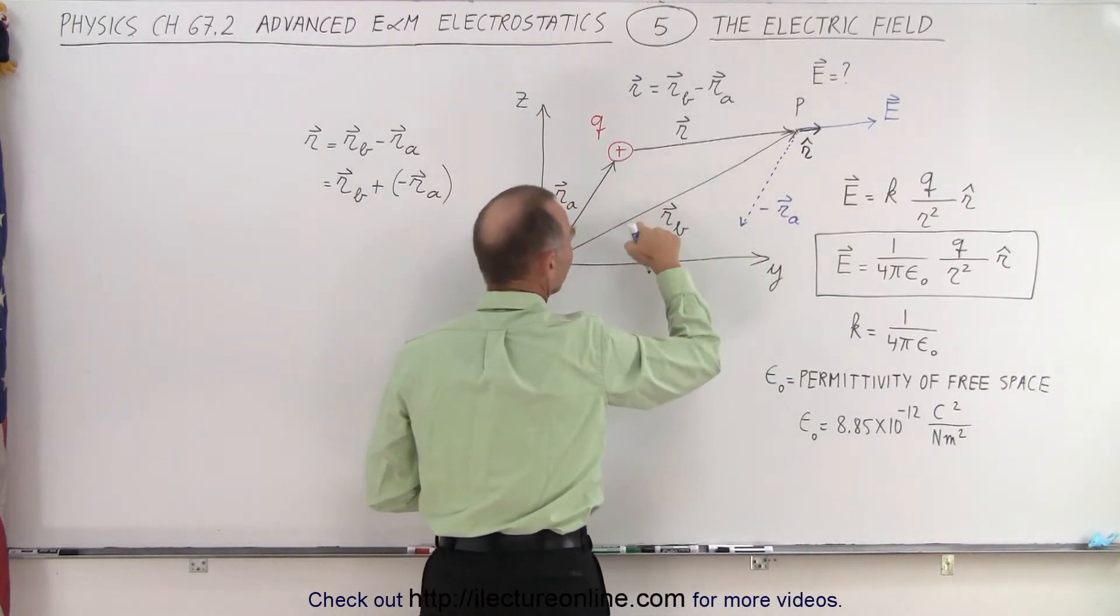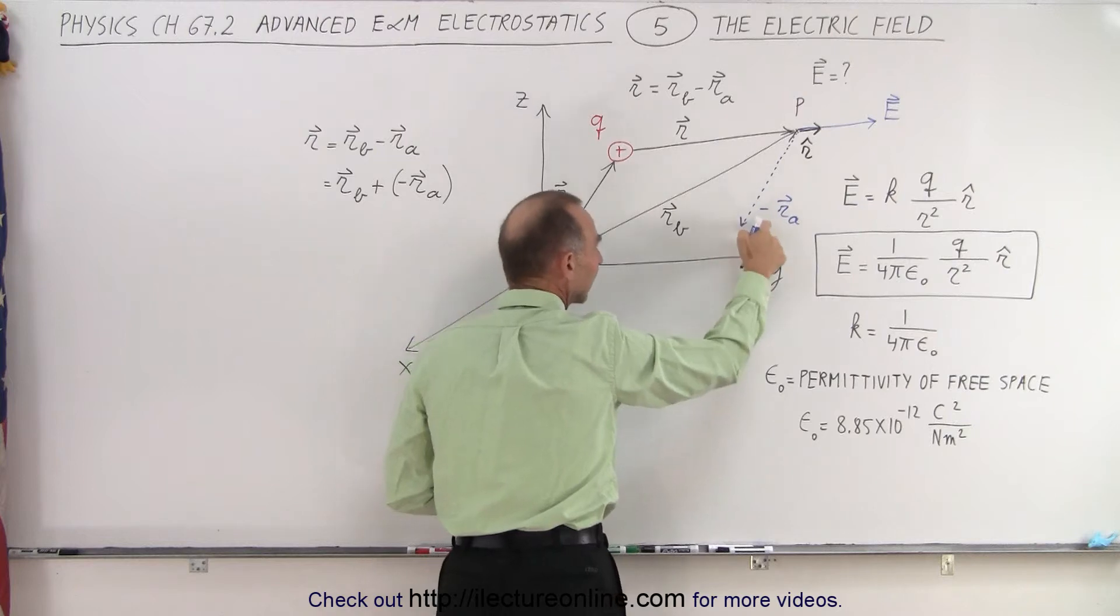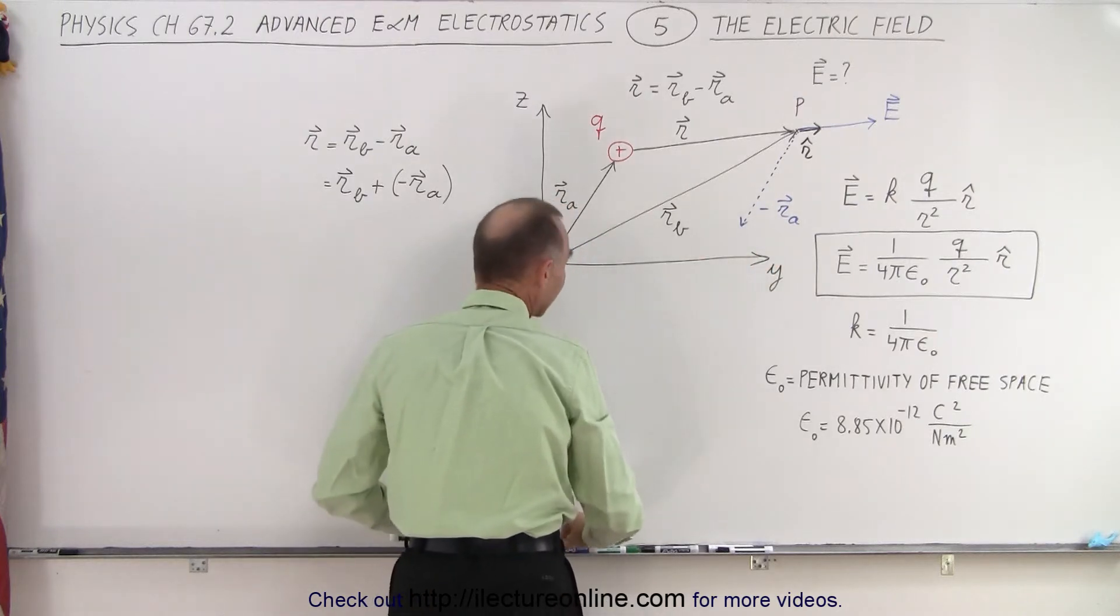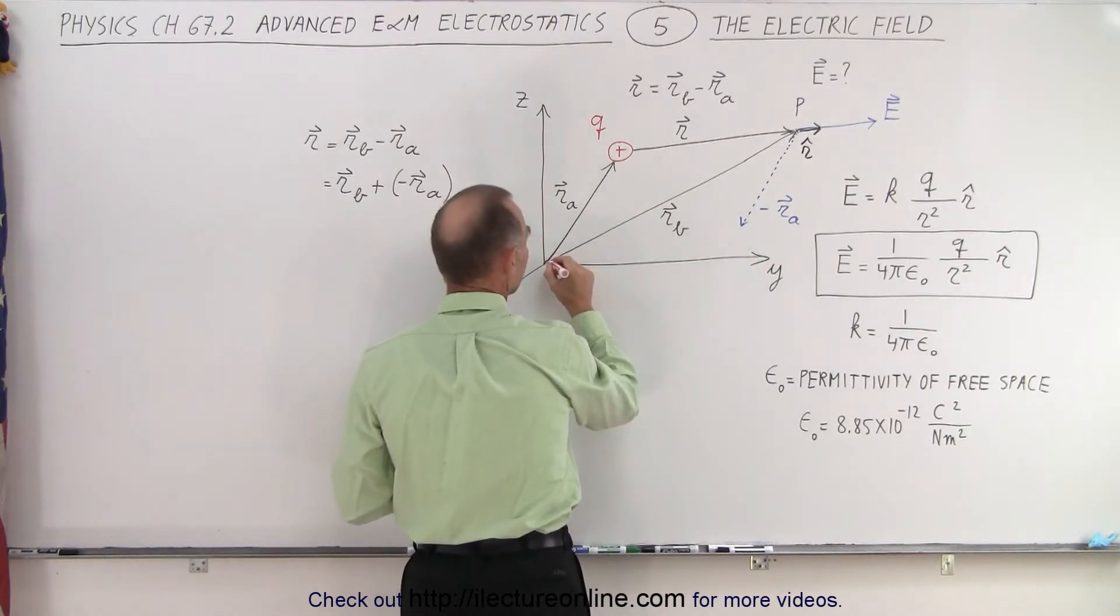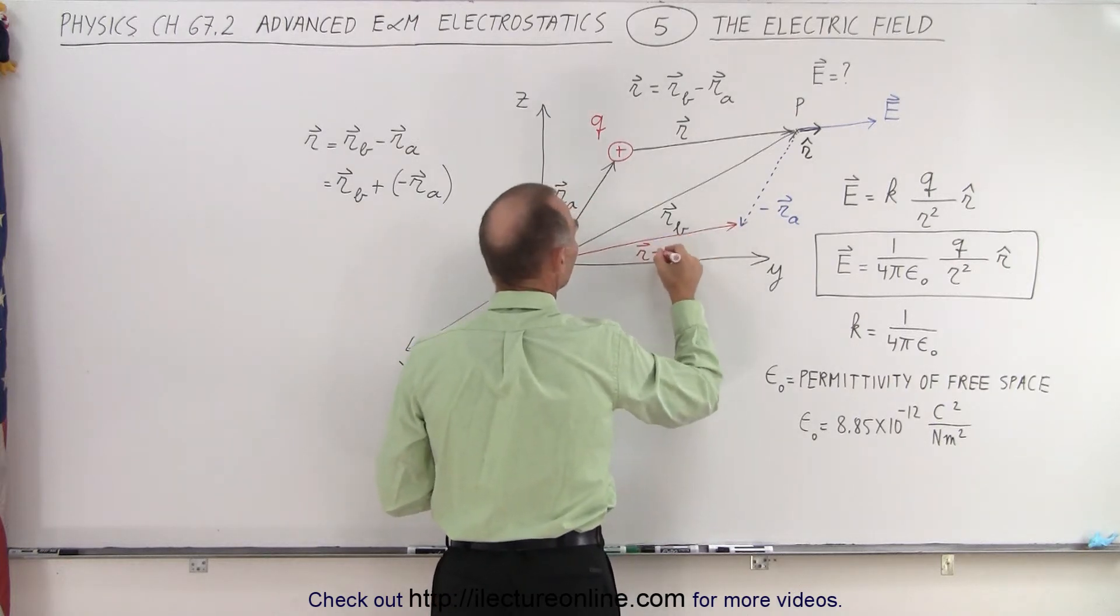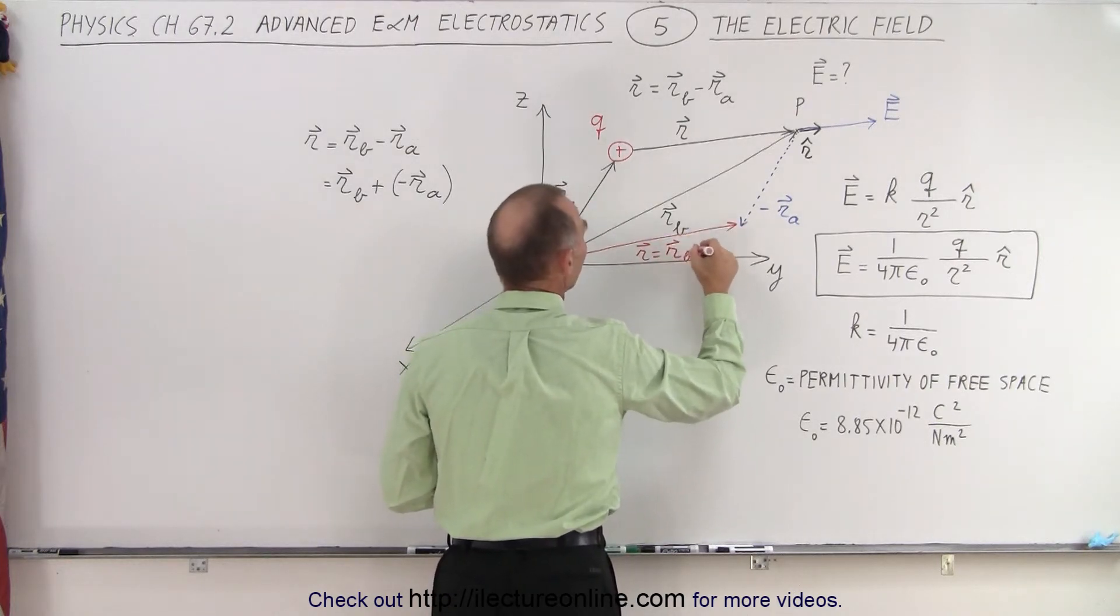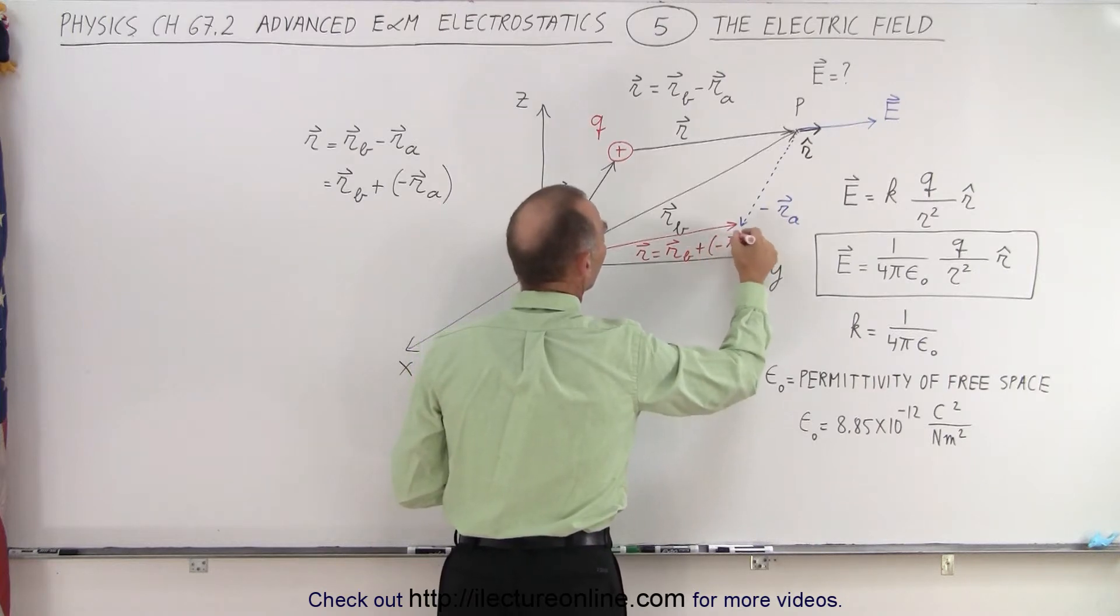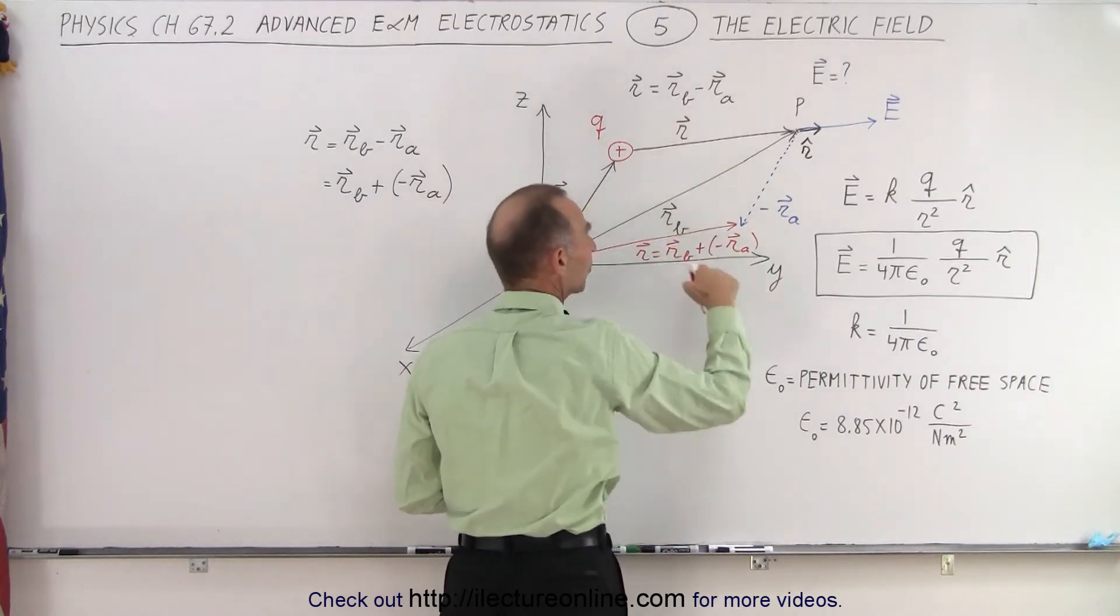You can see that this here will become the negative of r sub a. If we add these two vectors together, r sub b plus the negative r sub a, then we get this vector right here, which is the vector r. That's where that comes from.